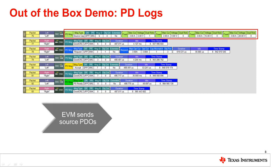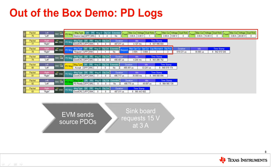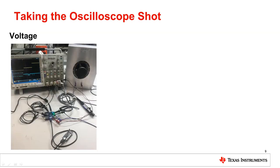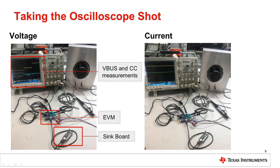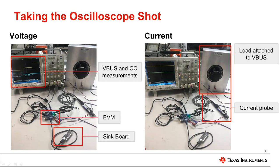The source, which is the EVM, sends its source capabilities by sending individual power data objects or PDOs. These capture the power options the source offers. The sink then requests the source 15 volt PDO, then the source accepts. To see these contract negotiations in real time, an oscilloscope was connected to the VBUS and CC test points on the EVM. The EVM was connected to the sink board and the 15 volt contract button was pushed on the sink board. The current was also read by attaching a load to the VBUS test point and then using a current probe to read the current, which is displayed on the oscilloscope.